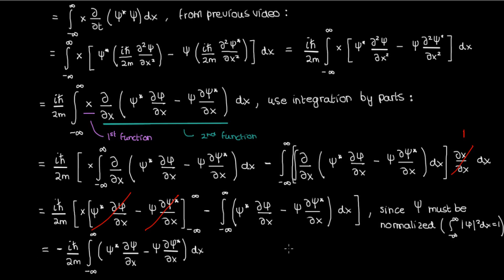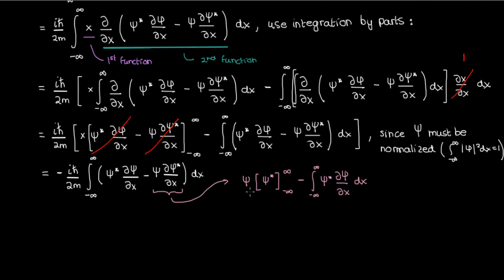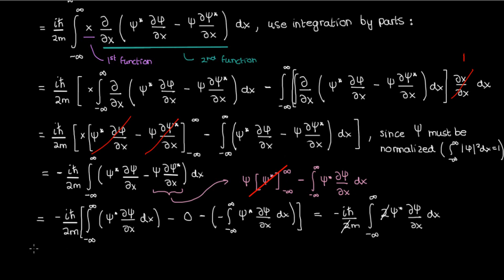We're not done yet. Let's do a quick integration by parts on just the second term, using the psi conjugate expression as the second function and psi as the first function. Again, when we do the integration by parts, the boundary term disappears because of normalization. Plugging the rest back in, we find that the rate of change of the expectation value of position, after simplifying, becomes negative i h-bar over m times the integral from negative infinity to infinity of psi conjugate times d psi dx.